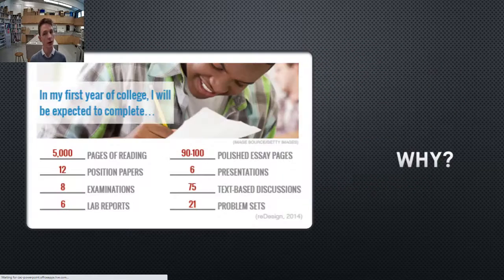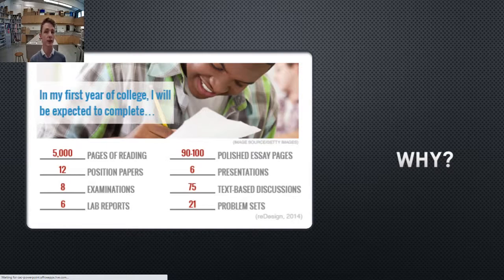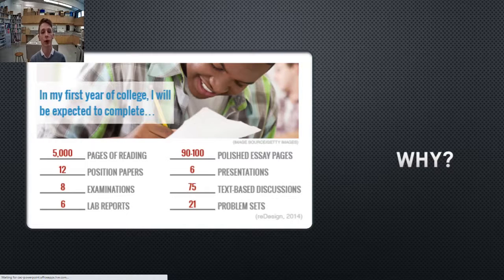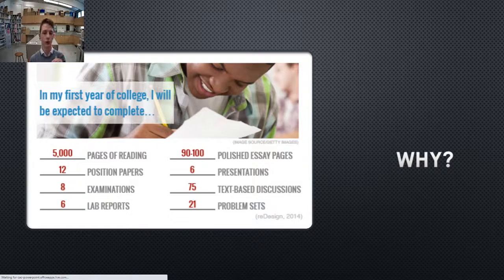Before I finish this video — why? There are multiple reasons, but this is my big guiding reason as a teacher: in your first year of college, university, tech school, trade school, or wherever you end up, you will be expected to complete somewhere in the range of five thousand pages of reading, and this is difficult textbook reading. Not the fun stories we can use now to make us better, faster, and deeper readers — these are technical papers and textbooks. You'll be asked to write 12 position papers, complete at least 8 exams, 6 lab reports, 90 to 100 polished essay pages — not something typed up quickly the night before, but polished, well-written, well-focused essay pages — plus 6 presentations, and so on. So I am trying to get you from wherever you're at today to being a more confident, comfortable reader. Okay, thank you.